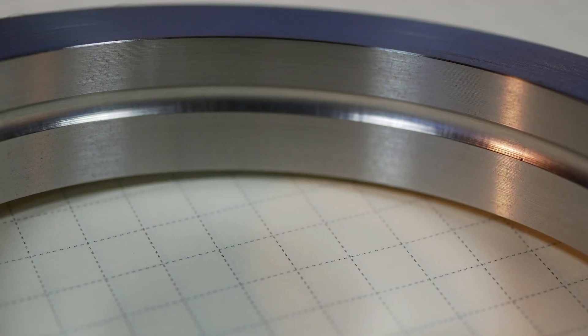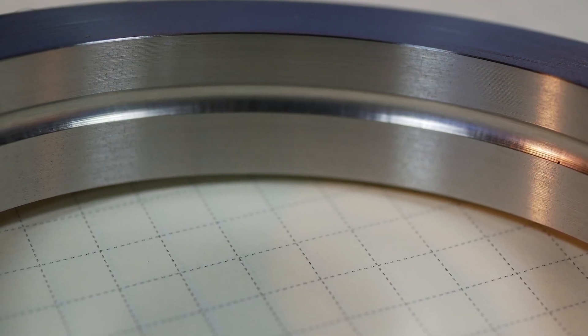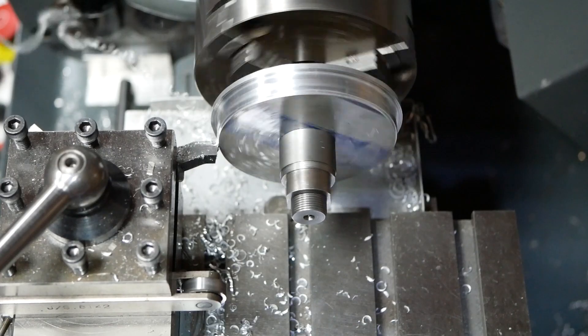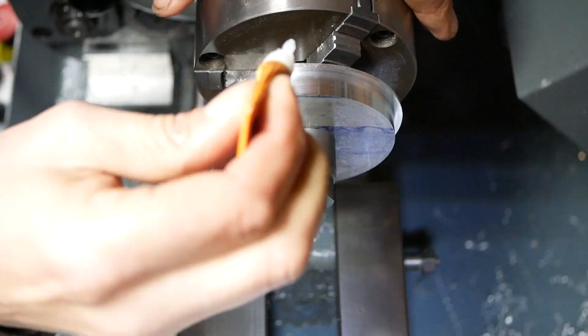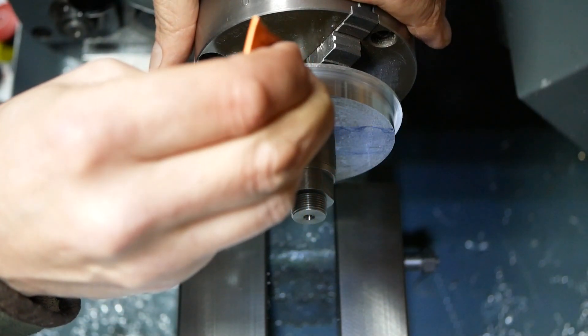A groove is cut inside the ring, and I'll explain why later. An aluminium mandrel is machined, which allows accurate mounting of the ring with the help of superglue before facing and lightly chamfering.